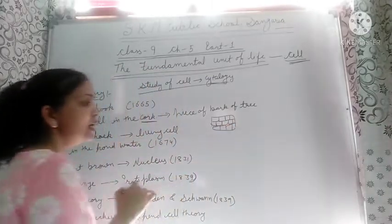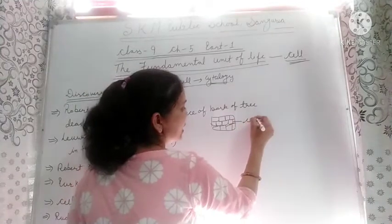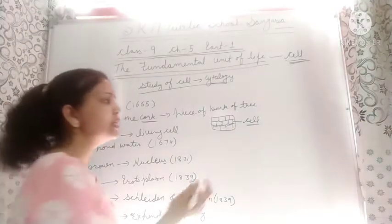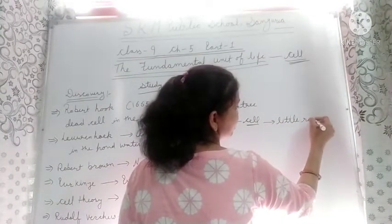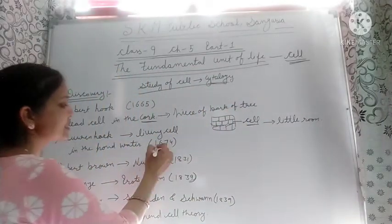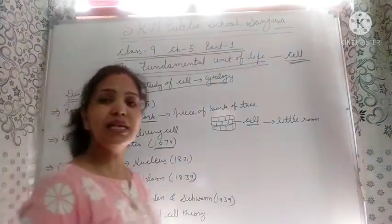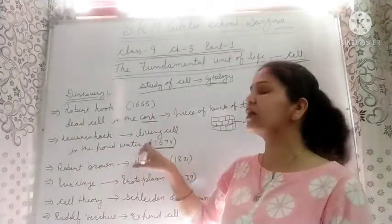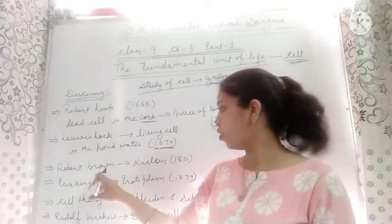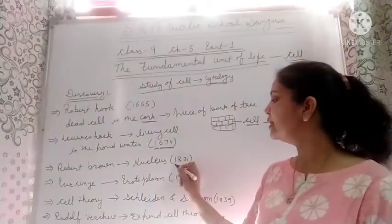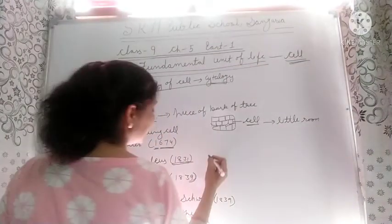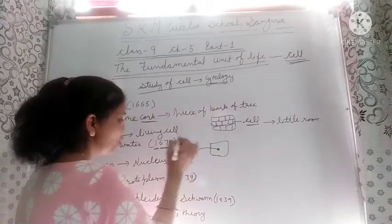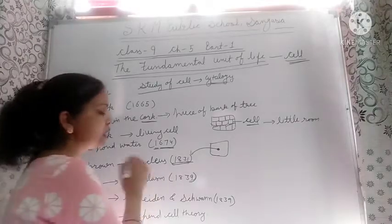He coined the term 'cell' for these little boxes in the cork. After that, in 1674, Leeuwenhoek discovered the living cell in pond water. Robert Hooke had discovered a dead cell in cork, while Leeuwenhoek discovered a living cell. Robert Brown discovered the nucleus in 1831 — he observed a dense structure present in the cell and coined the term 'nucleus.'